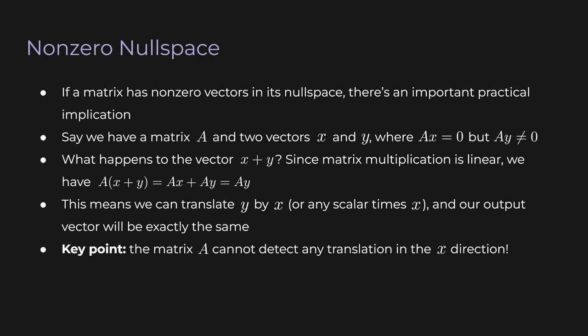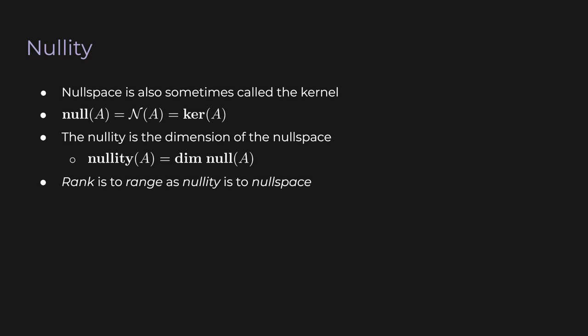You'll see in a later lecture how this ambiguity, due to a non-zero null space, can have serious consequences for practical applications. By the way, sometimes the null space of a matrix is called the kernel, written as ker(A). And sometimes you'll see null(A) written as a fancy N of A. Now let's close the loop with the concept of nullity. The nullity of a matrix is just the dimension of the null space: nullity(A) equals dim(null(A)).